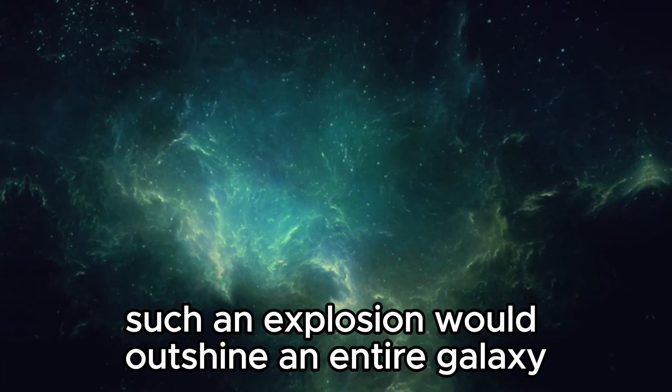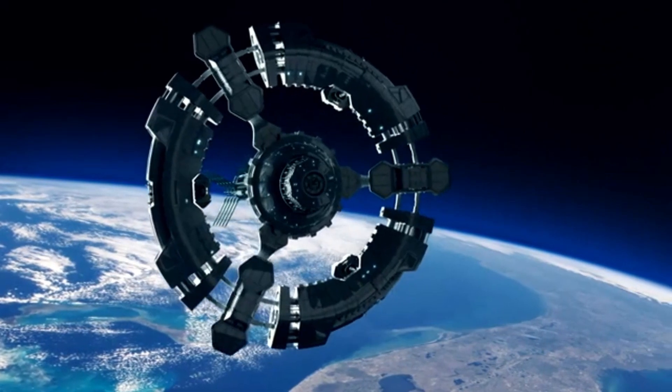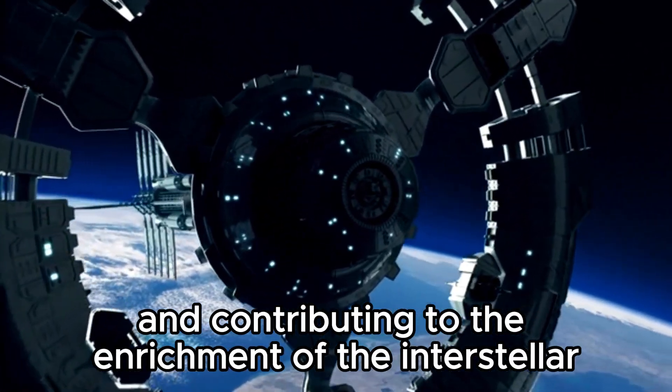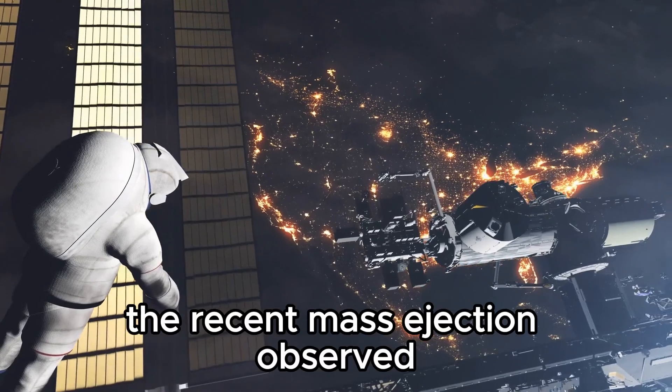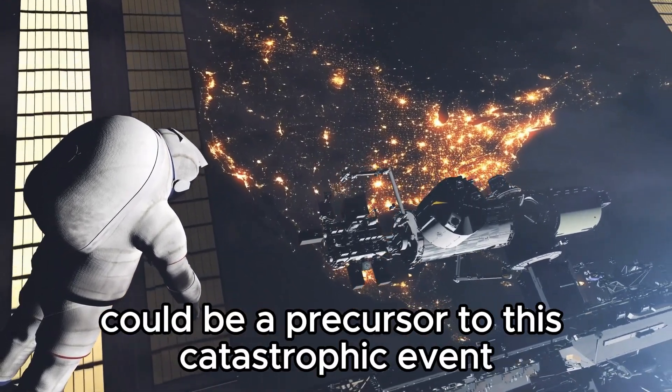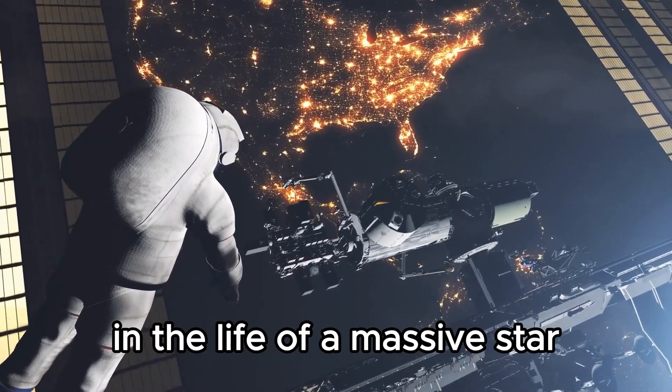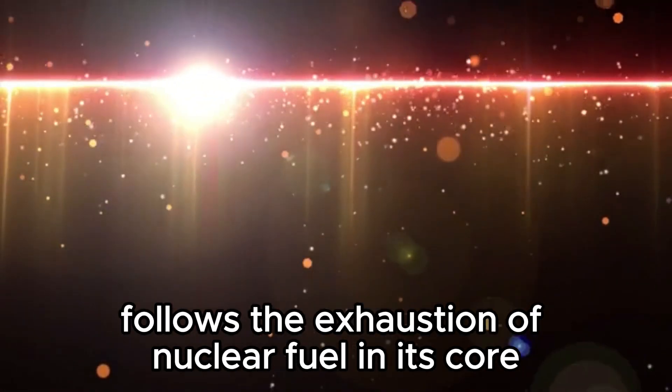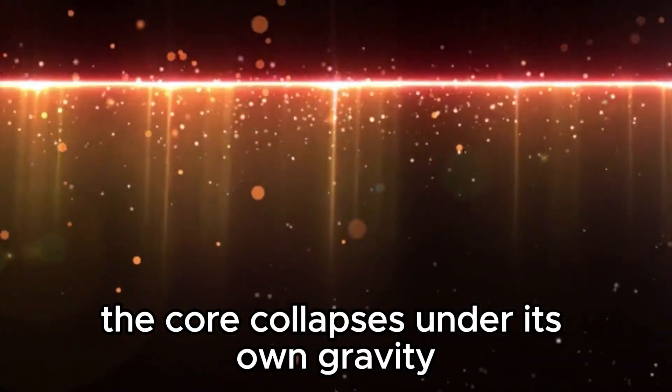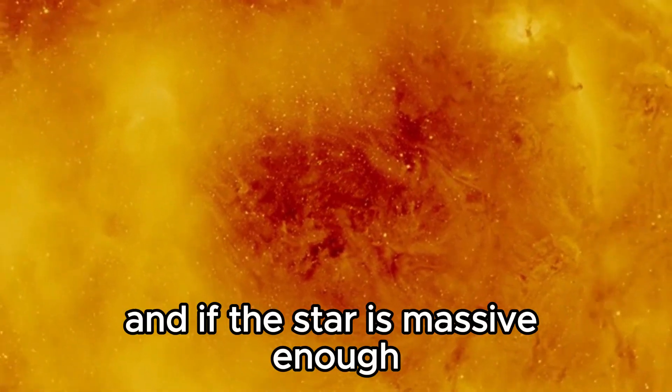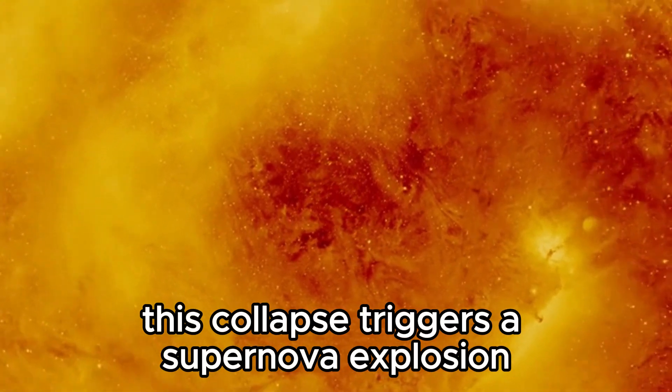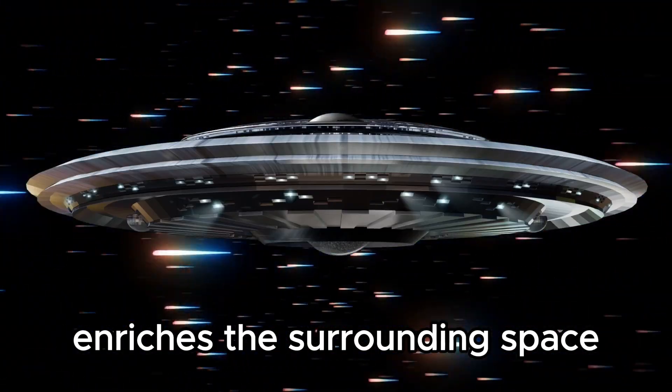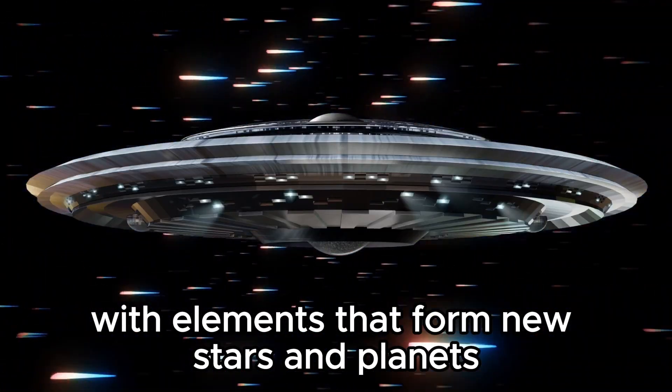Such an explosion would outshine an entire galaxy for a short period, releasing tremendous amounts of energy and contributing to the enrichment of the interstellar medium with heavy elements. The recent mass ejection observed could be a precursor to this catastrophic event. In the life of a massive star, the supernova stage follows the exhaustion of nuclear fuel in its core. The core collapses under its own gravity, and if the star is massive enough, this collapse triggers a supernova explosion. The material ejected during this event enriches the surrounding space with elements that form new stars and planets.